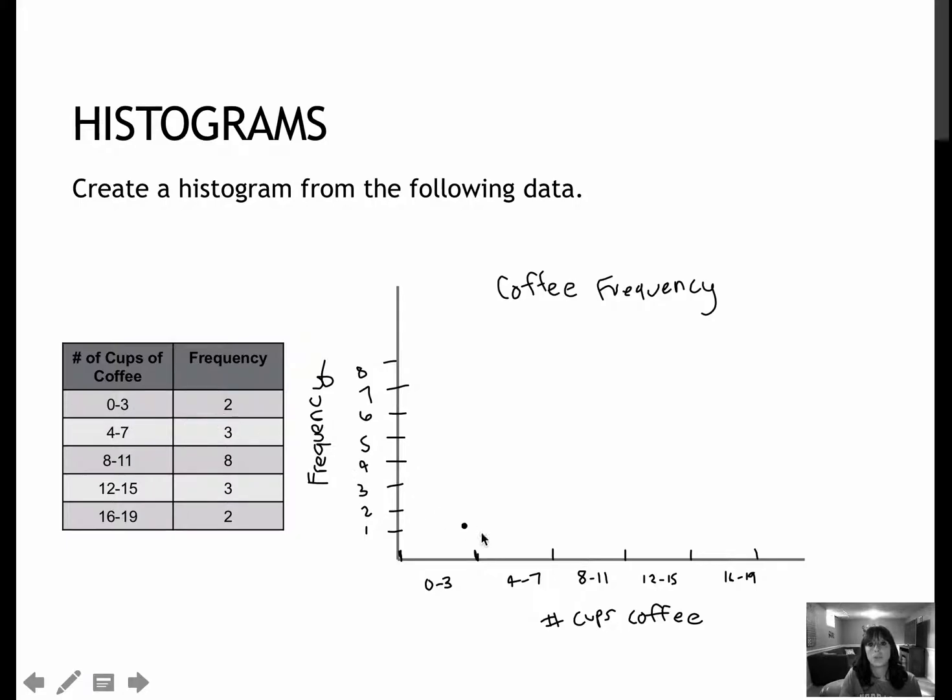0 to 3 had a frequency of 2, and so that's going to go all the way over to that bar. 4 to 7 had a frequency of 3. So that's all the way here. Notice those bars are touching. 8 to 11, there were 8 people who answered that way. 12 to 15 again was 3. And 16 to 19 was 2.